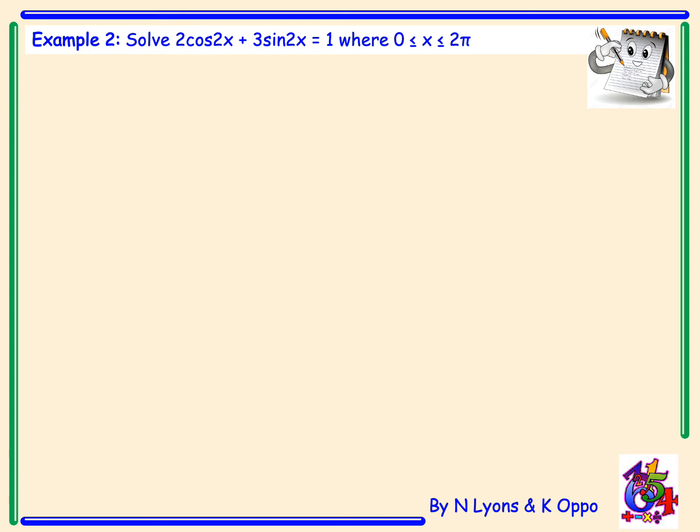Example 2: Solve 2 cos 2x plus 3 sin 2x equals 1 where x lies between 0 and 2 pi. So again here we've got two waves added together. So we'll need to put in two wave function form and then we need to also then equate it to 1 before we can solve for x.